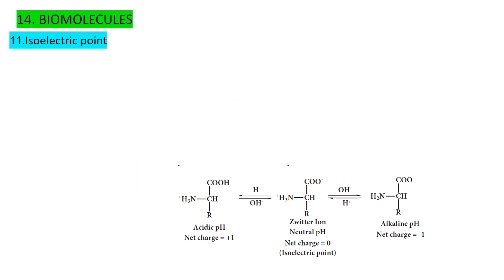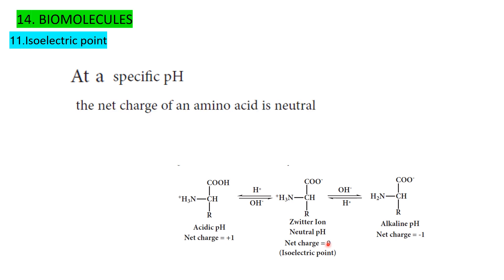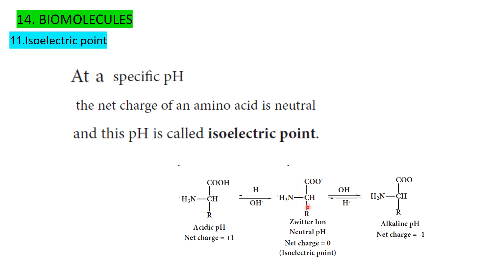Isoelectric point: at a specific pH, the net charge of an amino acid is zero (neutral). This pH is called the isoelectric point. Below this pH value, the amino acid carries a positive charge (acidic medium); above it, the amino acid carries a negative charge.